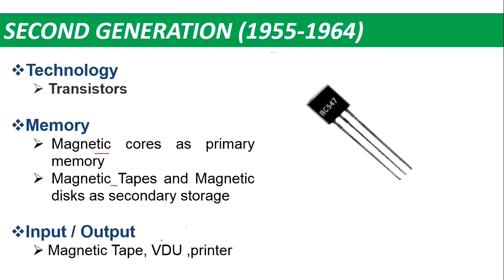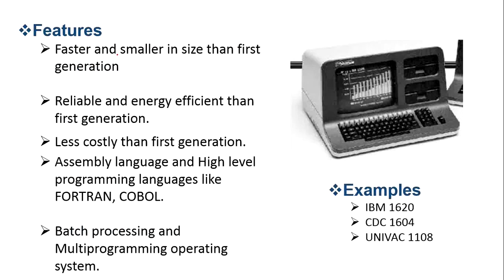For input and output, punch cards, magnetic tape, and printers were used. Compared to the first generation, these were faster, smaller, reliable, and energy efficient, though still costly. Assembly language and high-level programming languages like FORTRAN and COBOL were developed. Operating systems supported batch processing and multi-programming. Examples include IBM 1620, CDC 1604, and UNIVAC 1108, etc.